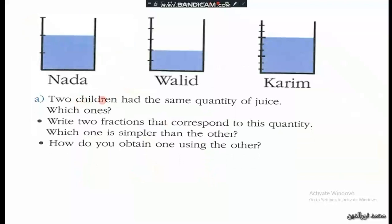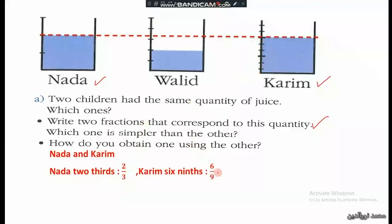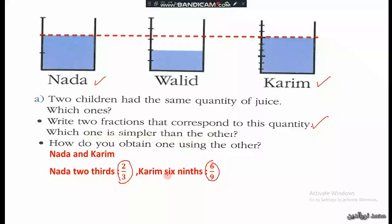Two children had the same quantity of juice — which ones? Looking at the level of juice, we see that Nada and Karim had the same quantity. Nada had two thirds — 2 over 3 — and Karim had six ninths — 6 over 9. These two fractions are equal: 2 over 3 equals 6 over 9.